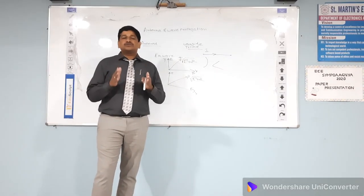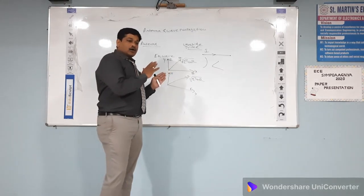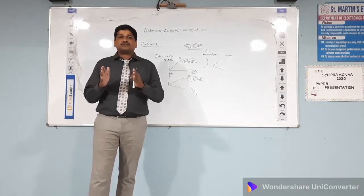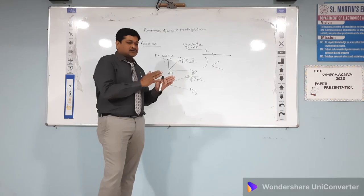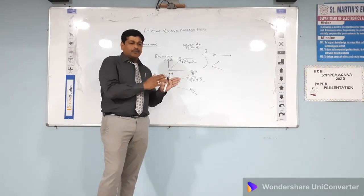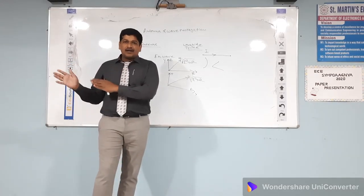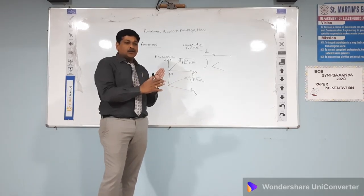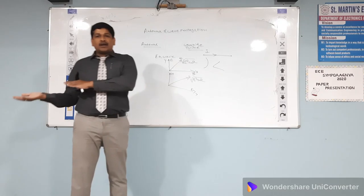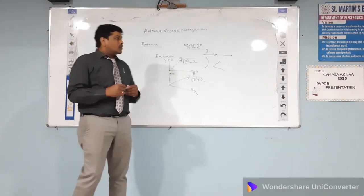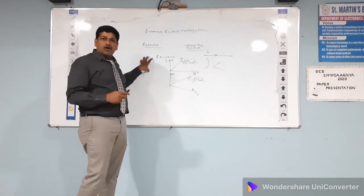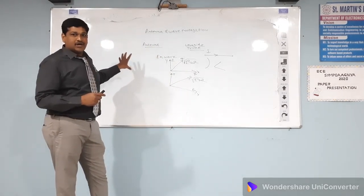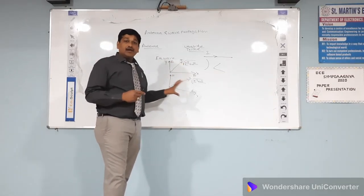An antenna is nothing but a transducer. It is used as a transition device — for making the transition from waveguide structures, or a guided medium, to the unguided medium. Electromagnetic waves are transduced from the guided medium to the unguided medium through these antenna structures. So antennas are metallic structures which are designed for transmitting or receiving the electromagnetic waves.